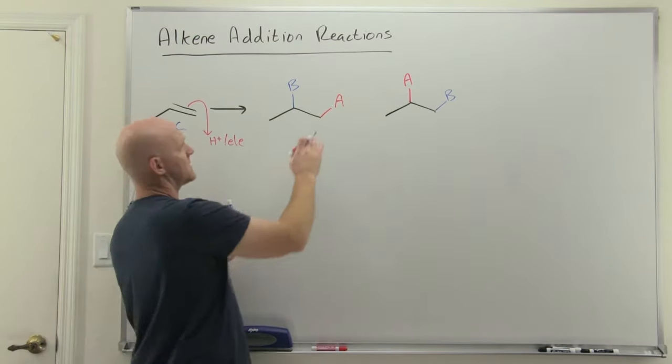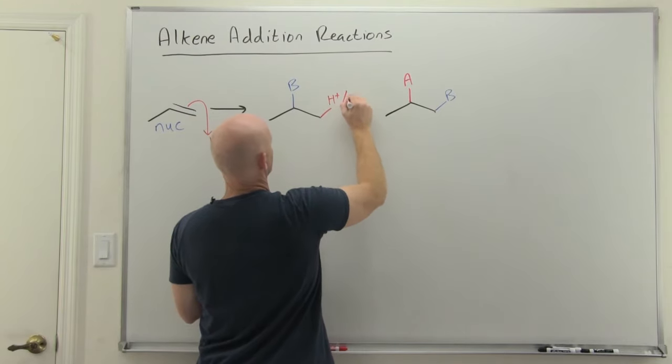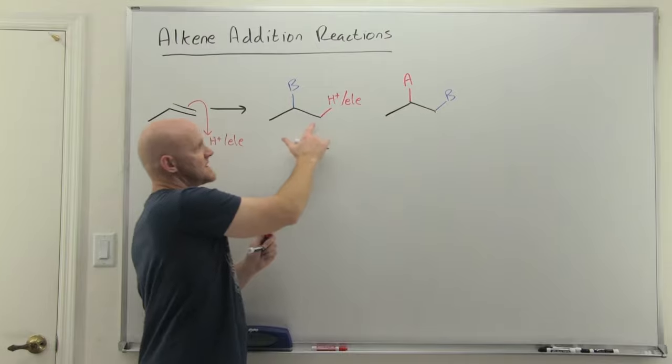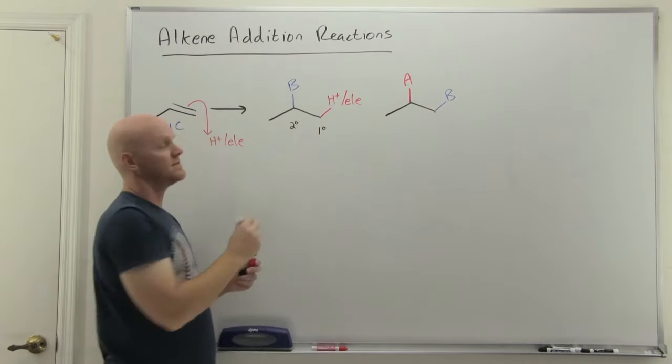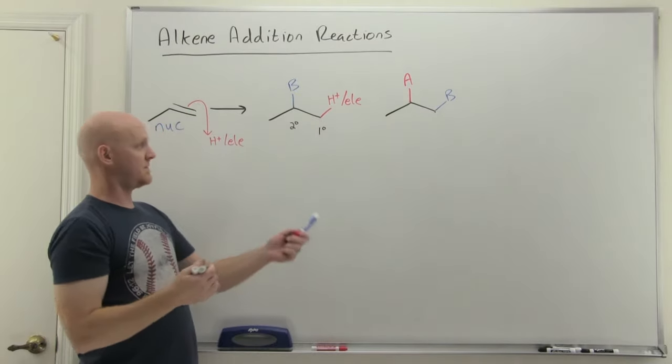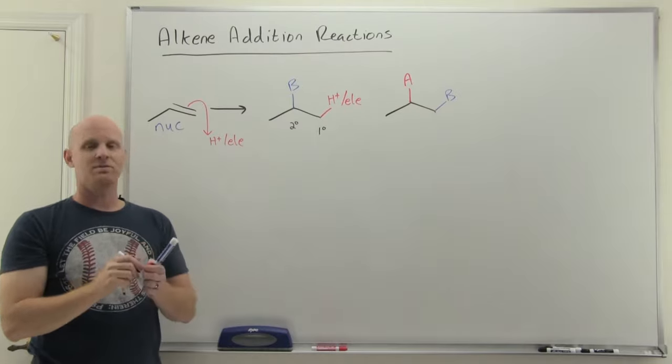so it turns out majority of the time that's going to end up on the less substituted side of the alkene. So notice this is a primary carbon, this is a secondary carbon. And the less substituted primary carbon is typically where the H plus or electrophile that gets attacked in the first step of the mechanism is going to end up.